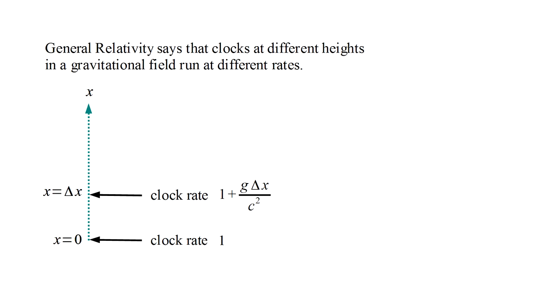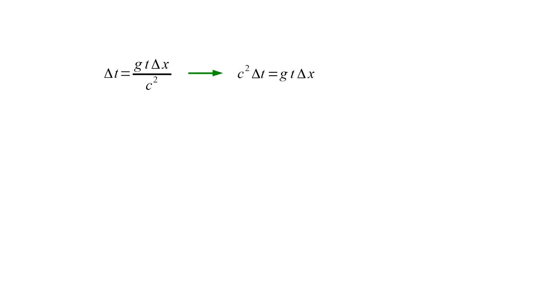This is gravitational time dilation, linked below to the video in the relativity series where this is discussed. Due to their different rates, after running for a time t, the clocks will differ by delta t equals g delta x over c squared times t. We rewrite this expression as c squared delta t equals g t delta x. Previously, we established delta m equals h over g t delta x. We rewrite this as g t delta x equals h over delta m.